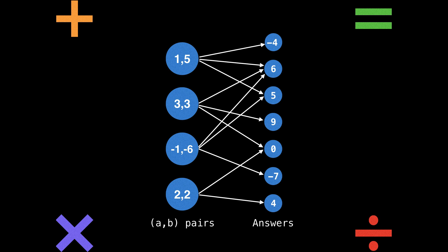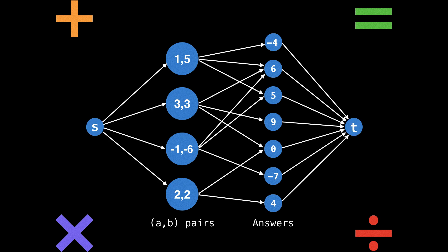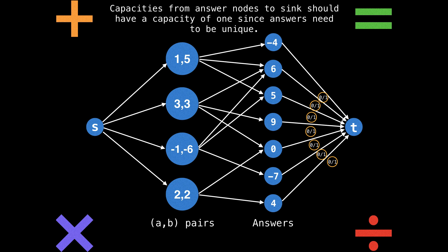Then, like every bipartite graph you're trying to find a matching for, you'll want to add the source s and the sink t. And the matching is really what we're after here; we want to match input pairs to answers, and then we've actually solved the problem. The next step, after adding the source and the sink, is to actually assign capacities to the edges of the flow graph.